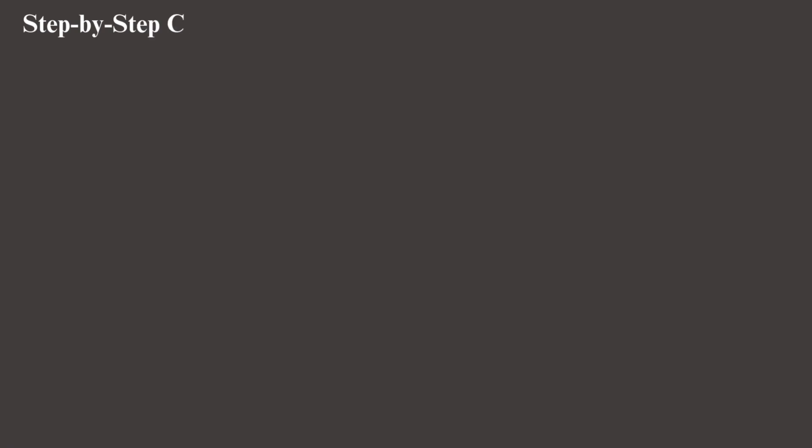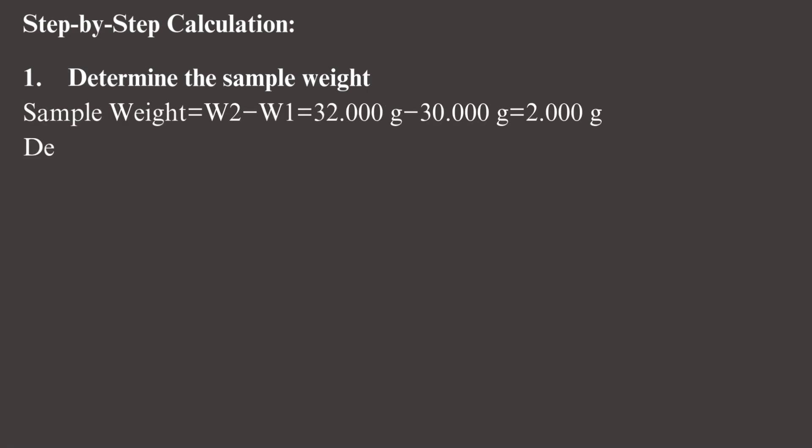Step-by-step calculation. Determine the sample weight: sample weight equals W2 minus W1 equals 32.000 grams minus 30.000 grams equals 2.000 grams.